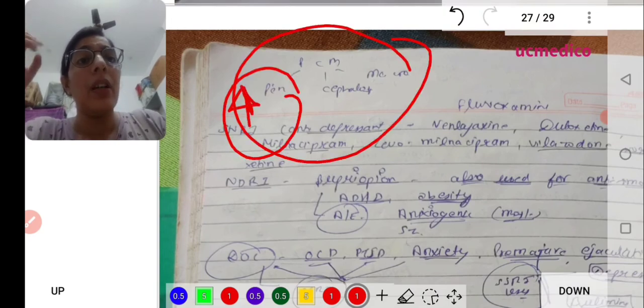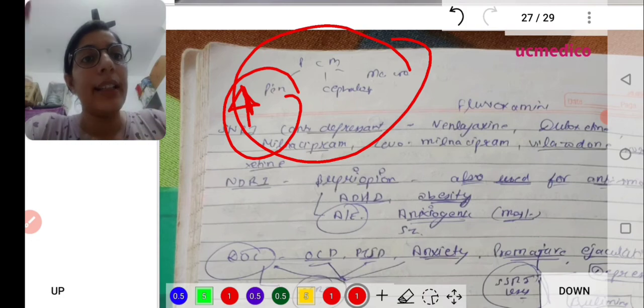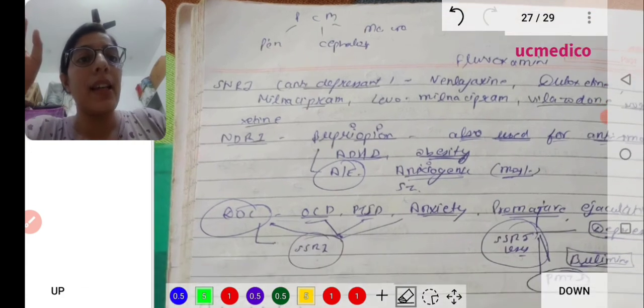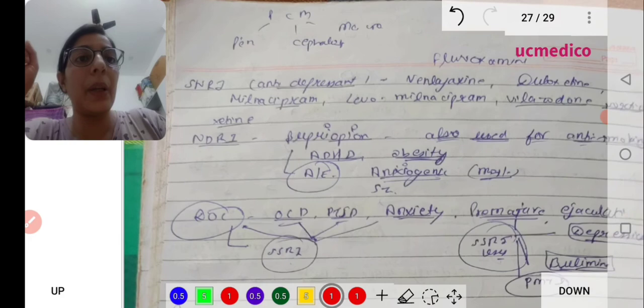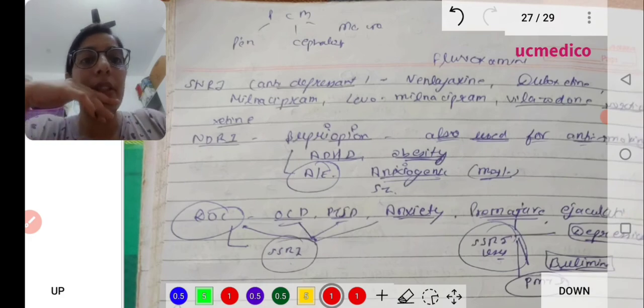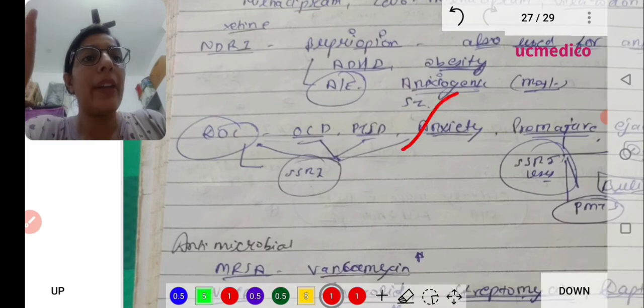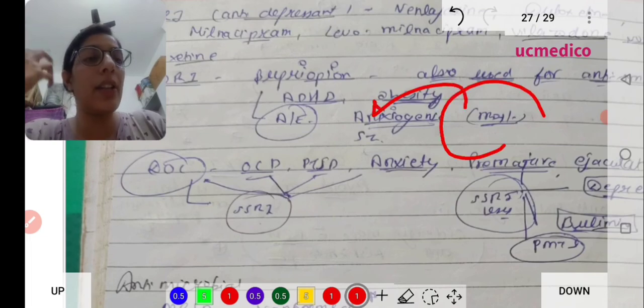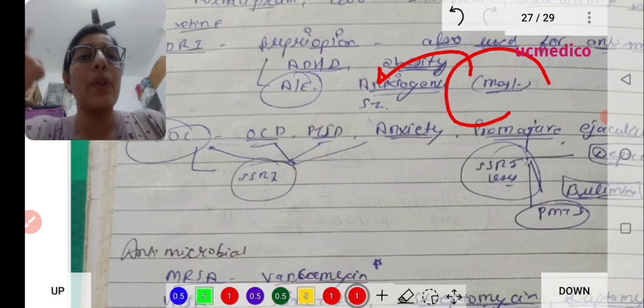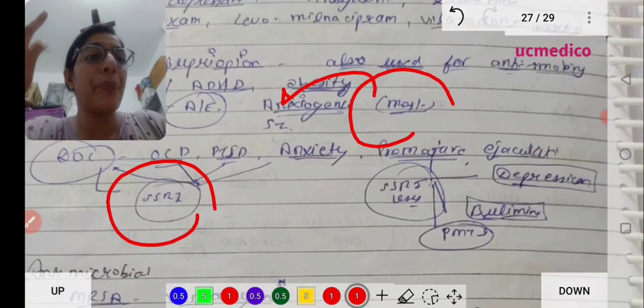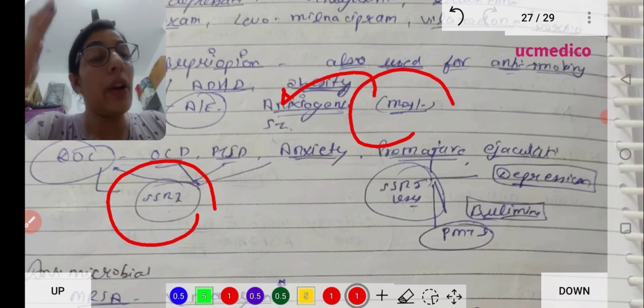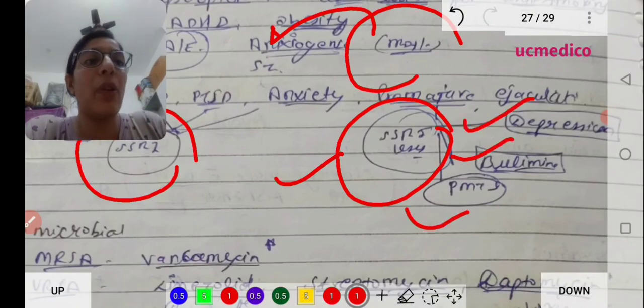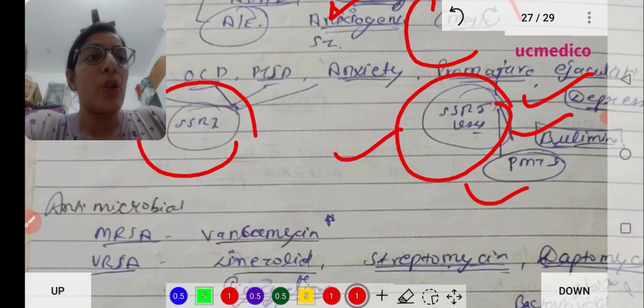Here is PCM mnemonic - penicillins, cephalosporins, and macrolides can be given in pregnancy. SNRI - serotonin and norepinephrine reuptake inhibitor drugs. NDRI - adverse effect of bupropion is seizures. Drug of choice for OCD, PTSD, anxiety is SSRI. For premature ejaculation, SSRIs are used. Other uses: depression, bulimia, and for PMDD, post-menstrual dysphoric disorder.